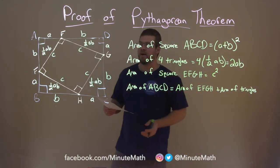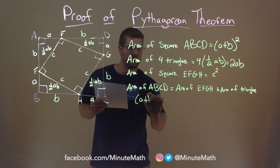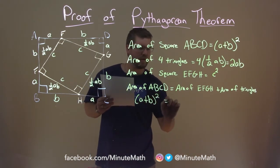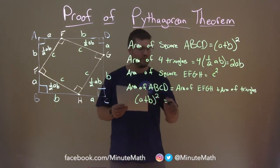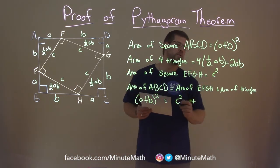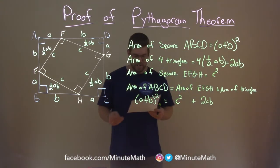Well, the area, the big area, we defined that as A plus B squared. The area of EFGH, okay, is just C squared. And all the little triangles here is just 2AB. And from here, let's see what we can simplify.